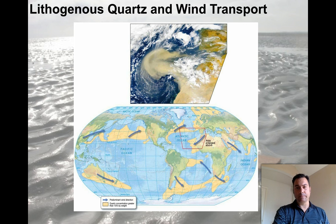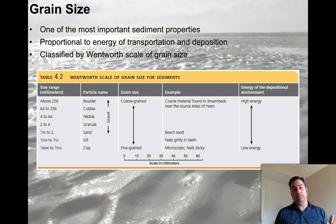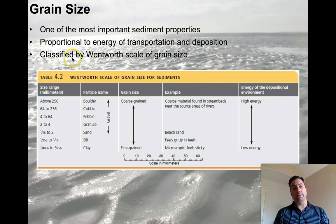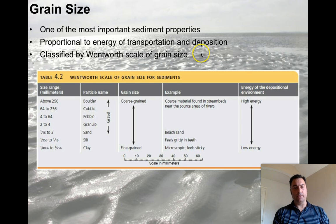So lithogenous quartz can be deposited very long distances by wind. Grain size is important — small stuff gets transported far, coarse stuff stays pretty close to where it was deposited to the ocean because the waves can't transport it a long distance. One of the most important sediment properties is grain size — it's proportional to the energy of transportation and deposition. We'll talk about that when we get into beaches.